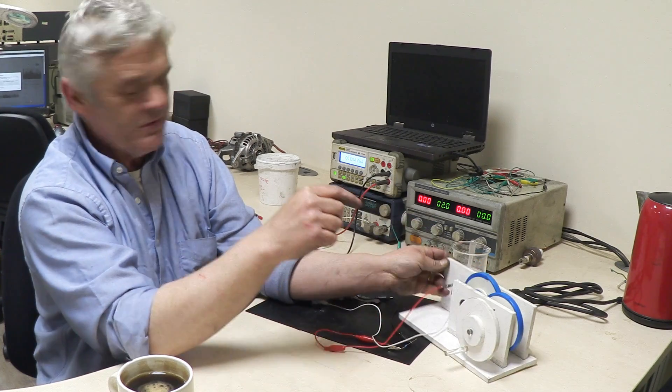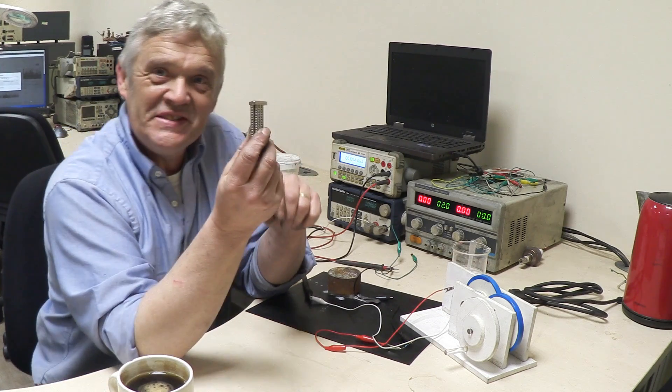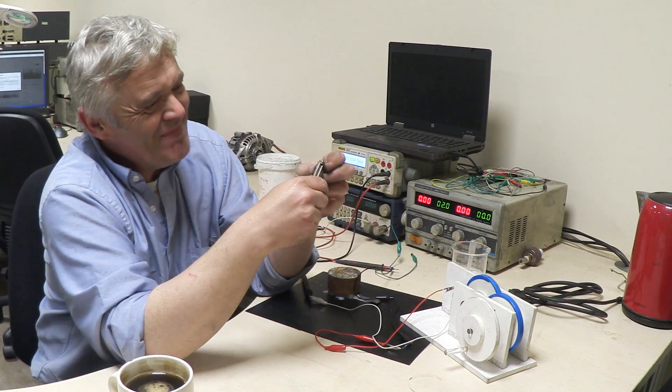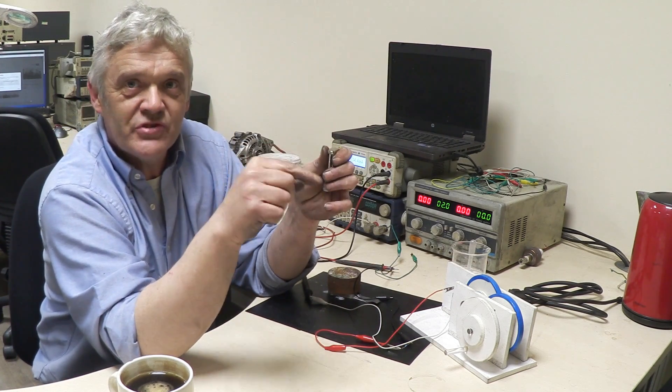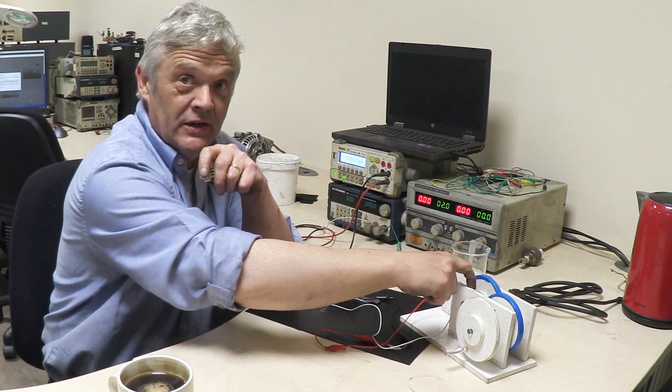And that's because underneath this blue tape is a whole load of these things. Tiny magnets. These tiny magnets are arranged north south north south north south all the way around this ring this ring and this ring. So what they are in fact are magnetic gears.